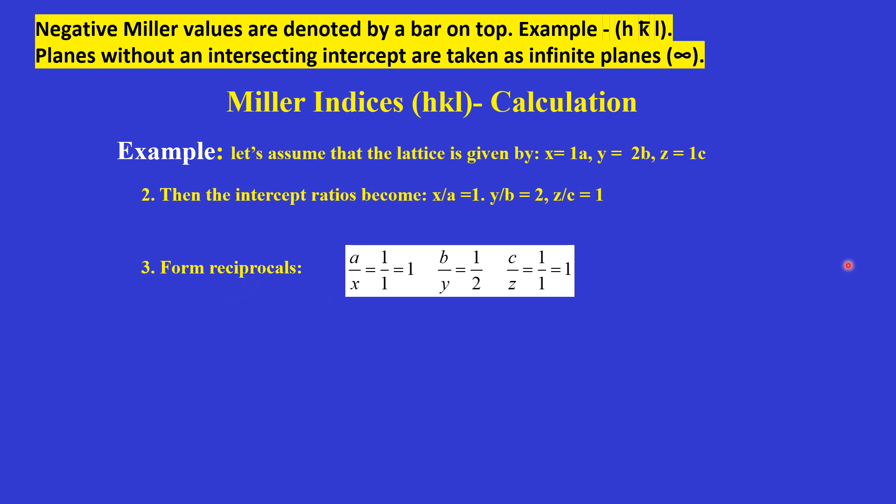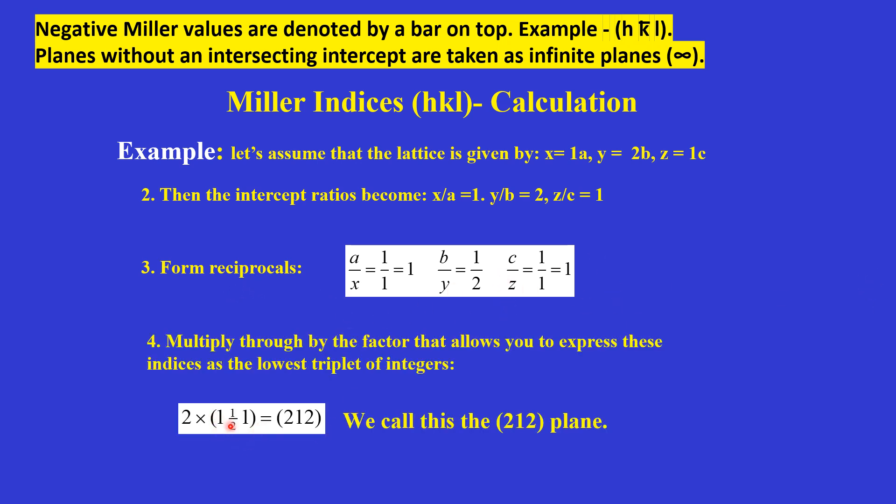Then we take the reciprocal: 1, 1/2, 1. If we put this in integer form and multiply by the minimum integer, we multiply by 2. So 2, 1, 2 is the plane for the intercept 1, 2, and 1 on the x, y, z axes.